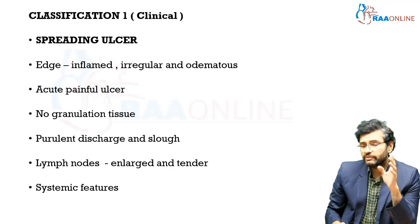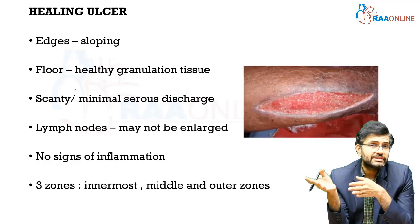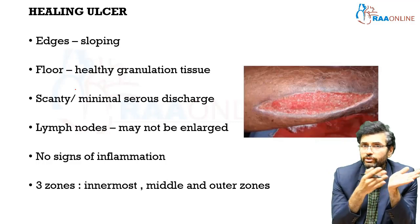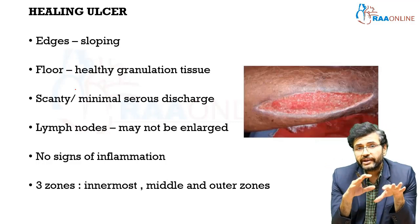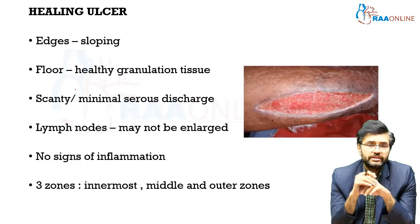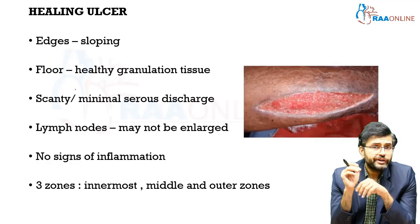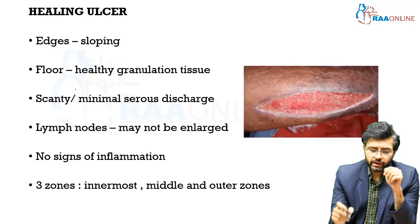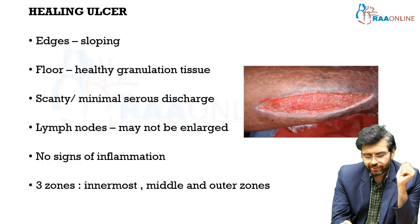The second type is a healing ulcer. A spreading ulcer slowly progresses to a healing ulcer with adequate intervention. A healing ulcer has sloping edges and a floor with healthy granulation tissue. There is scanty to minimal serous discharge, no enlarged regional lymph nodes, and no features of inflammation. Characteristically, healing ulcers have three zones: a red zone of healing granulation tissue, a middle bluish zone where epithelium regenerates, and an outer zone where fibrosis is present.